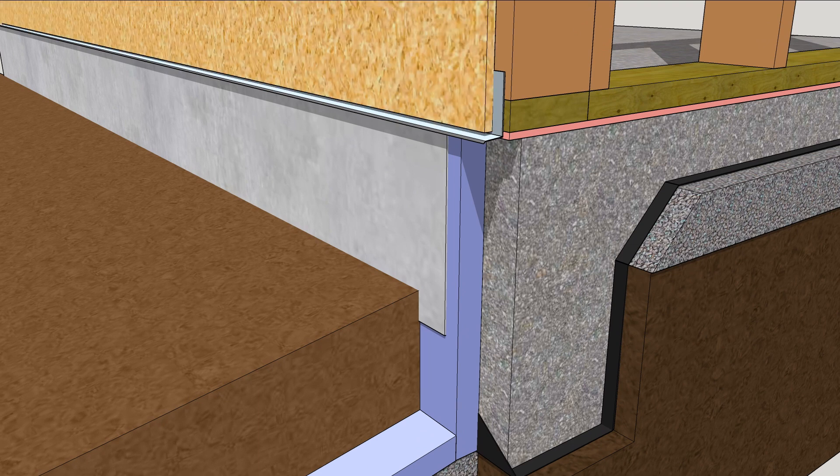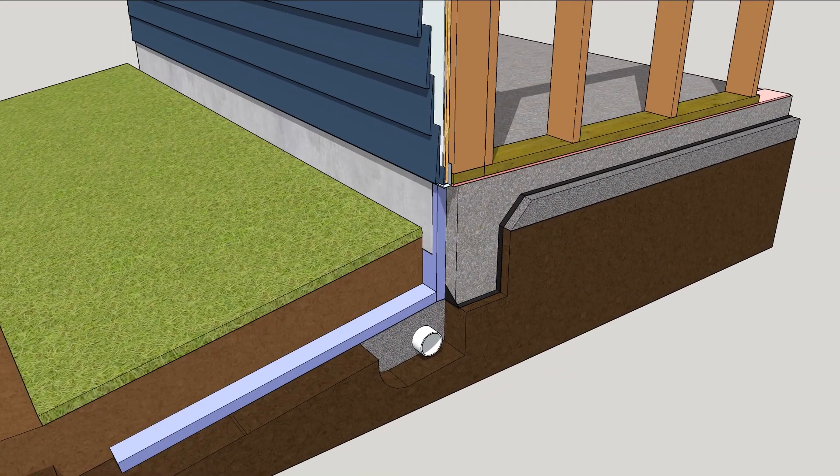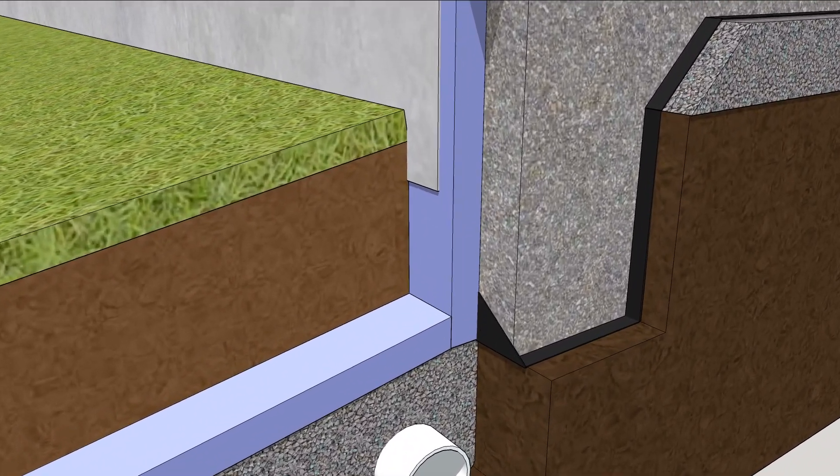Install the OSB and WRB, hang the siding, plant some grass, and then take lunch. Confident that this slab will stay warm and dry for a long, long time.